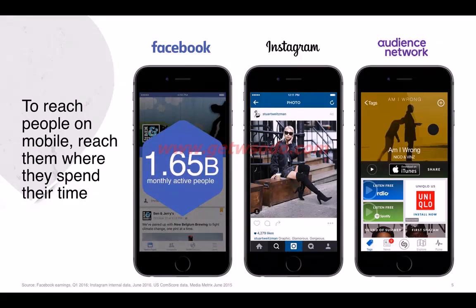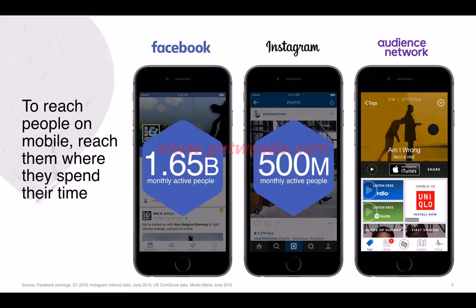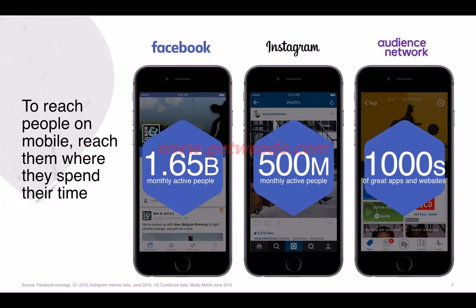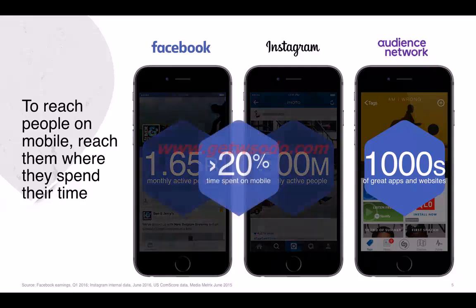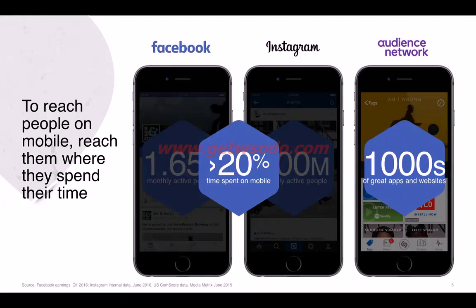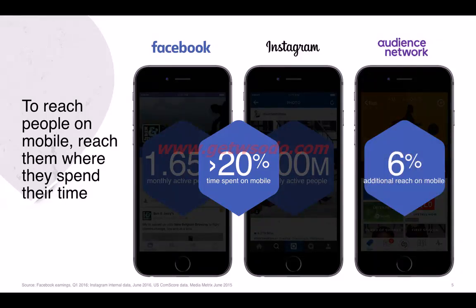Facebook has 1.65 billion monthly active users. Instagram has 500 million active users. The audience network consists of thousands of various applications and websites. 20% of the total time spent on mobile has been taken up by Facebook and Instagram — that's a huge chunk. The audience network also enables Facebook to reach an additional 6% of people.